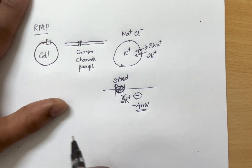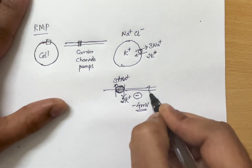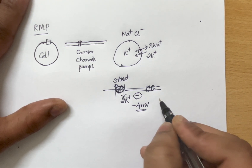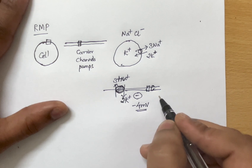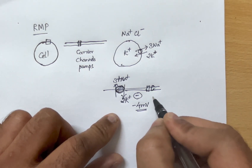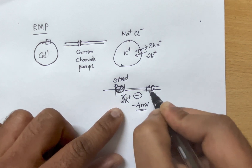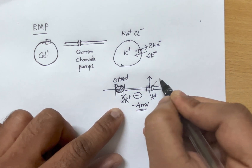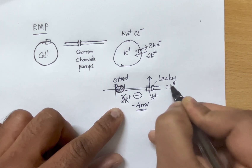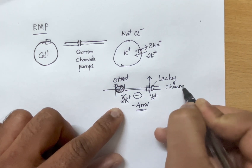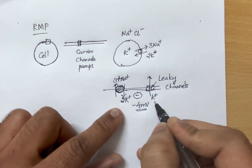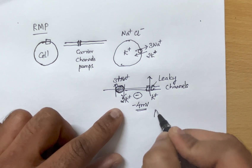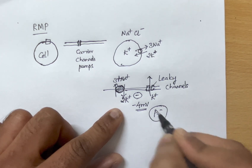The cell membrane also has integral proteins that are more permeable to potassium ions compared to sodium ions. So potassium ions can move out of the cell along the concentration gradient even at rest. These integral proteins act like leaky channels through which potassium ions move from inside the cell to the exterior.